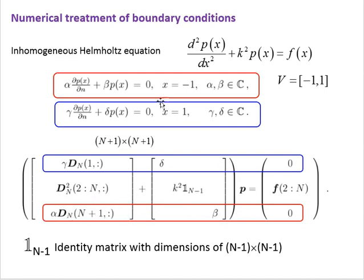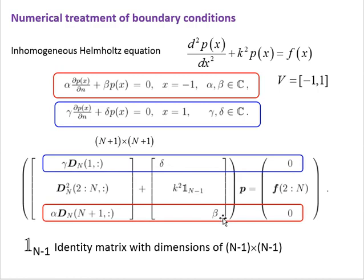The first row represents the boundary condition at X equal to 1, and the last row represents the boundary condition at X equal to minus 1. To represent the Robin boundary condition, the first row has alpha multiplied by the derivative D plus beta, and the sum equals 0. The second boundary condition uses gamma times D plus delta, together multiplied by P equal to 0. So the first and last rows encode the boundary conditions.